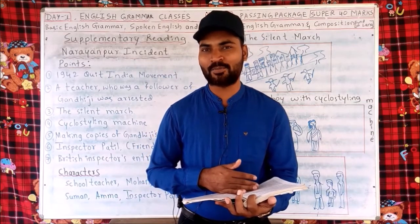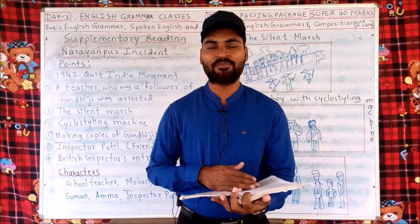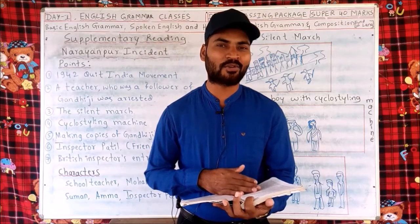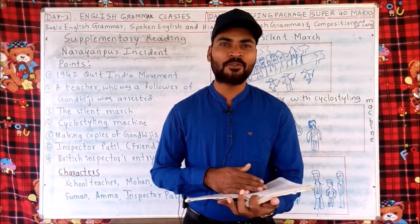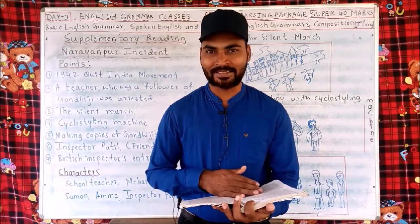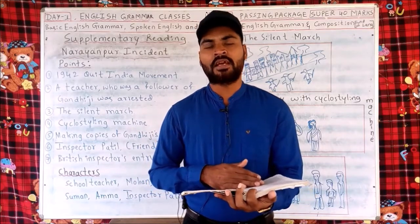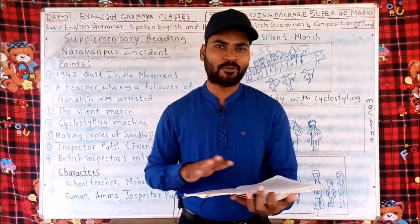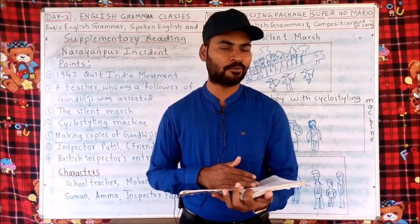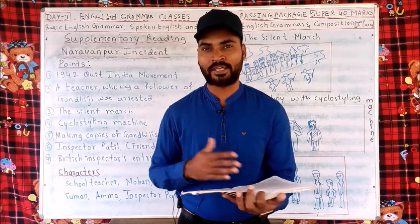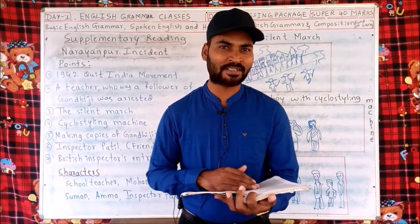Mohan explained to Babu and Manju that they had decided to march silently because they didn't want to be arrested by the British, as they had a lot of things planned for the coming days. On the same day after dinner, Suman came with a boy who had a strange box on his shoulder. In that box was a cyclostyling machine, and they planned to make copies of Mahatma Gandhi's speech using it. The machine was kept in the puja room so that nobody would suspect.